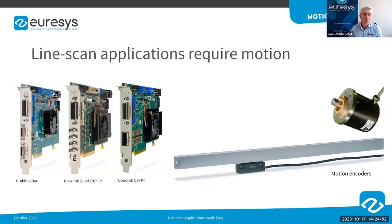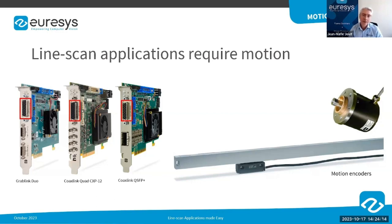All Euresys frame grabbers, whether compatible with Camera Link, CoaXPress, or CoaXPress over fiber standards, are equipped with a dedicated I/O lines connector to connect motion encoders. They even support quadrature motion encoders with a frequency up to 5 MHz.